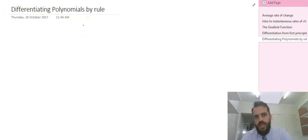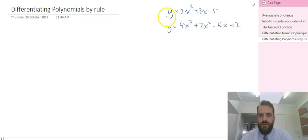So in this video we're going to be differentiating polynomials by rule. Something like y equals 2x squared plus 3x minus 5, or y equals 4x cubed plus 7x squared minus 5x plus 2.